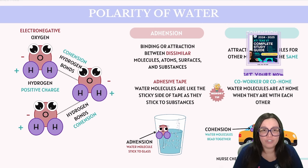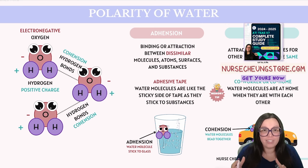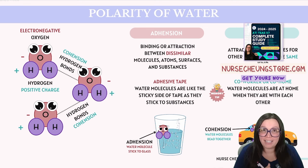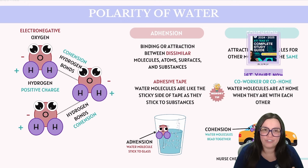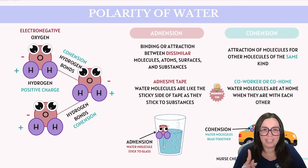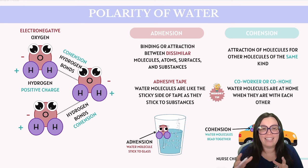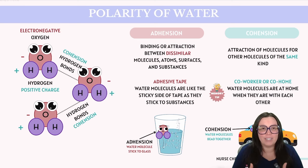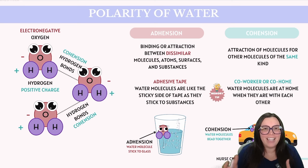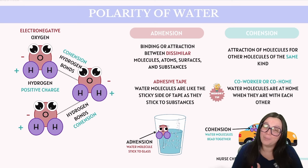As we discussed in our atomic structure video, oxygen, with an atomic number of 8, has 8 protons and 8 electrons — 2 in its inner shell and 6 in its outer shell. It needs two more electrons to complete its outer shell based on the octet rule. It gets these electrons when two hydrogen atoms, which both have one valence electron in the outer shell, share with oxygen. This uneven distribution of electrons gives oxygen a slightly more negative charge and hydrogens a slightly more positive charge.